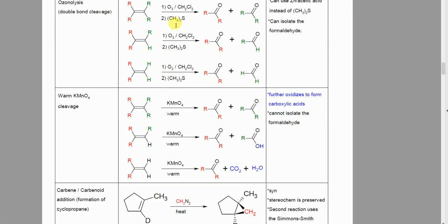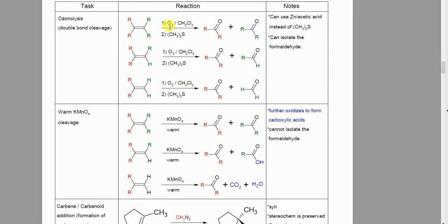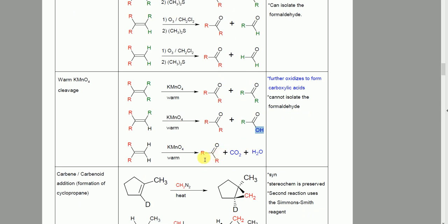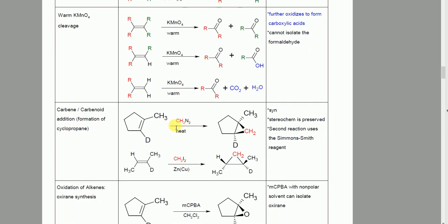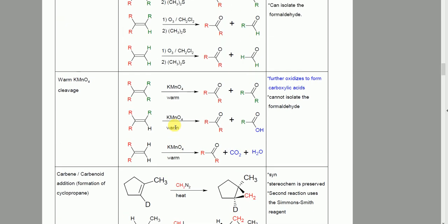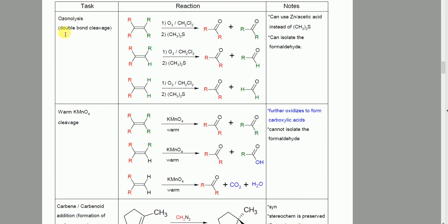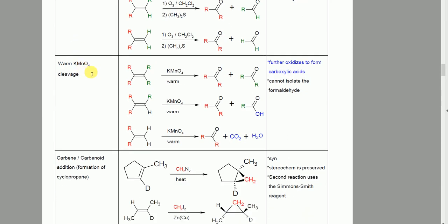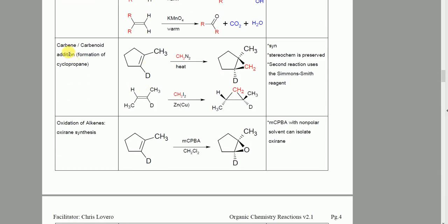So these two reactions — ozonolysis and KMnO4 — do the same thing but one is a stronger oxidizer. Ozonolysis keeps hydrogens as hydrogens, but KMnO4 continues oxidizing to an alcohol, and if you have two hydrogens, it decomposes to CO2 and H2O. These reactions will be repeated for triple bonds and it'll be essentially the same thing, just slightly different.